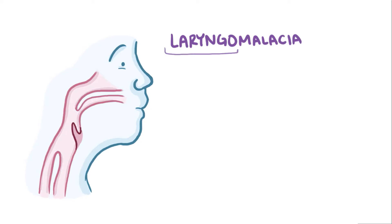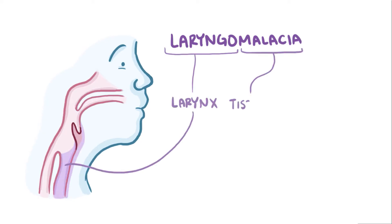With laryngomalacia, laryngo refers to the larynx, and malacia refers to a body tissue that's soft. So laryngomalacia is a developmental condition where the larynx doesn't form right and ends up being soft and floppy.